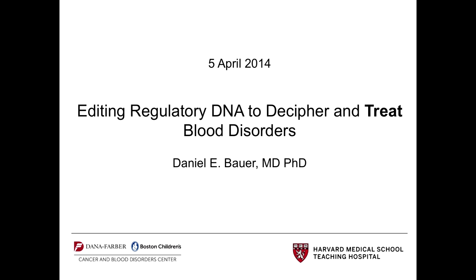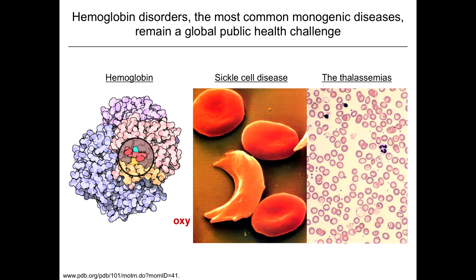Before I get to that, I need to give you a little background into the clinical and biological questions I'm interested in. Here's a schema of hemoglobin, which is a tetramer of two alpha and two beta globin chains, each with a heme moiety, which is the oxygen-carrying constituent of red blood cells.